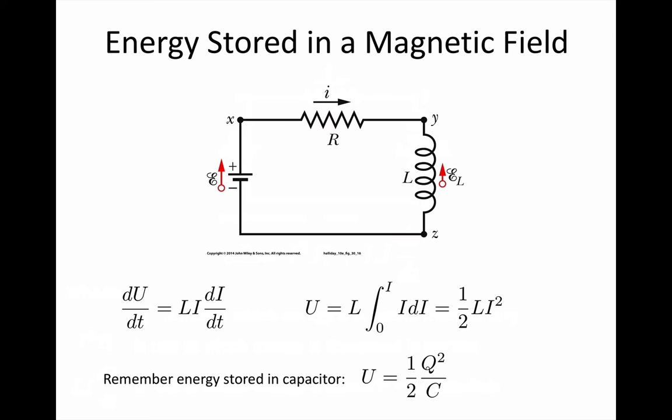Now you might remember back to our working out the energy stored in a capacitor, which is a pretty similar form. There the energy was a half times Q squared, where Q is the charge, and then C is the capacitance.